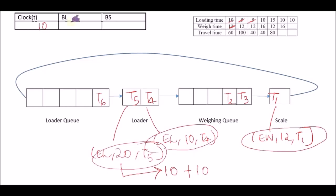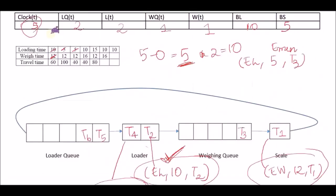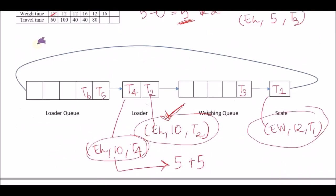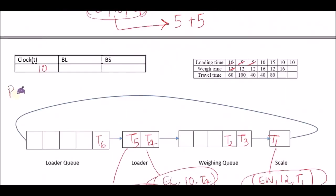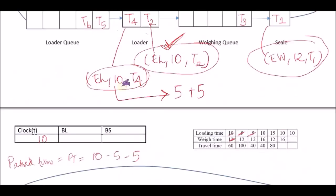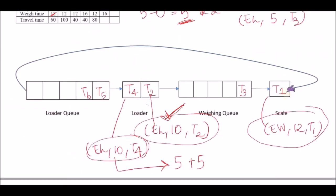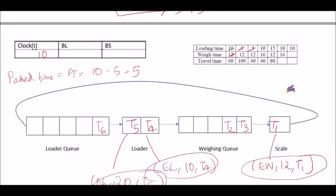Now we need to calculate BL and BS. How much time has passed since the last event? The last event was at 5, and the current is 10. So the past time — let's call it PT — is 10 minus 5, which is 5. In these 5 minutes of elapsed time, both the loaders were busy and the scale was busy. So BS is just going to be 5.